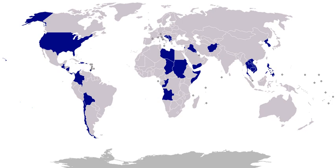Three thousand pirate attacks on merchantmen were reported between 1815 and 1823. In 1822, Commodore James Biddle employed a squadron of two frigates, four sloops of war, two brigs, four schooners, and two gunboats in the West Indies. 1815, Algiers: the Second Barbary War was declared against the United States by the Dey of Algiers of the Barbary States, an act not reciprocated by the United States. Congress did authorize a military expedition by statute. A large fleet under Captain Stephen Decatur attacked Algiers and obtained indemnities.